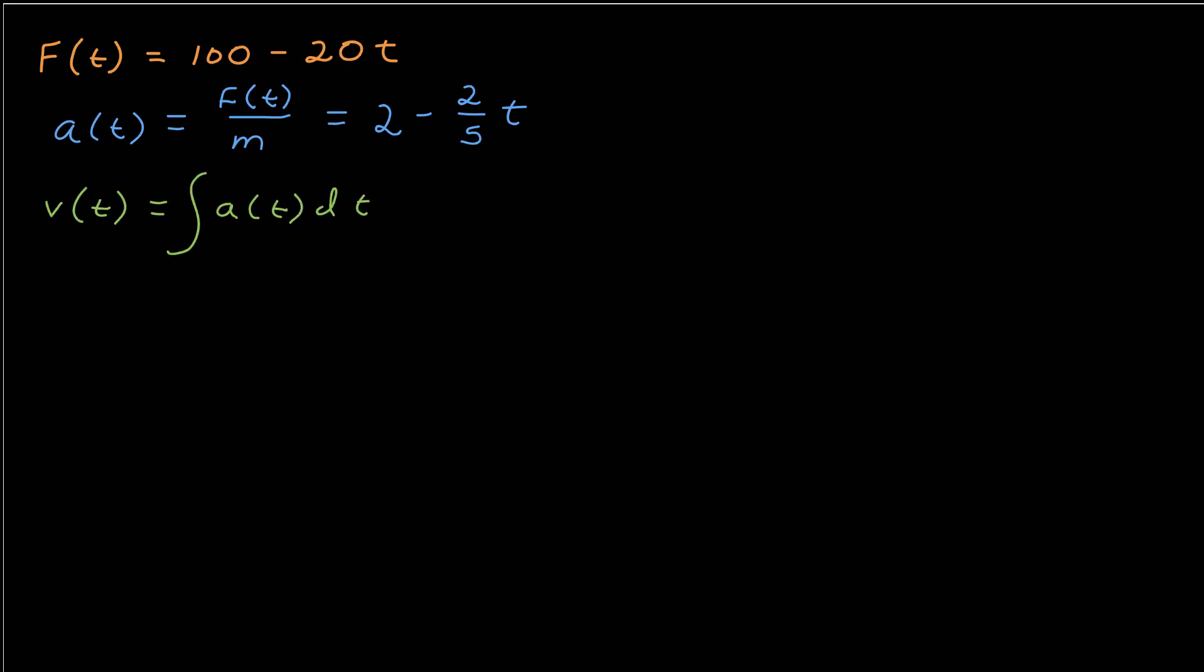That's great. So now I want to know the velocity, which is the indefinite integral of the acceleration, which is this simple polynomial. The indefinite integral of that is 2t minus 2 fifths t squared over 2. So the twos cancel, and I get 1 fifth t squared plus this integration constant c. Because the velocity at t equals zero is just equal to c, and I was told in the original problem that the object started at rest, which meant the velocity started at zero. So that means I can just get rid of the c, and my velocity function is 2t minus 1 fifths t squared.